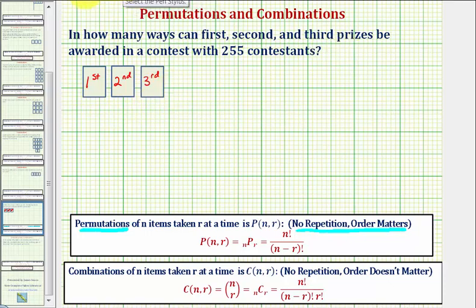So let's first use the counting principle. We'll determine how many ways we could assign the first, second, and third place prizes.